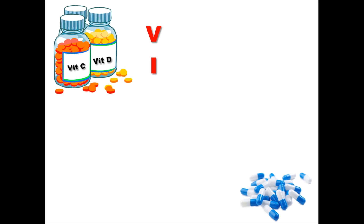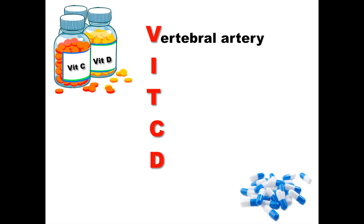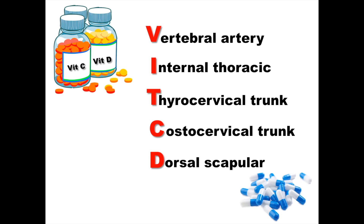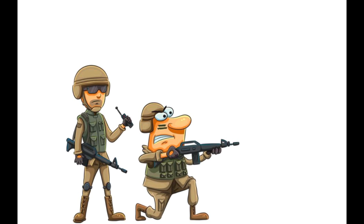In 'VITAMIN CD': V stands for vertebral artery, I for internal thoracic artery, T for thyrocervical trunk, C for costocervical trunk, and D for dorsal scapular branch. The thyrocervical trunk has three sub-branches and the costocervical branch has two sub-branches.